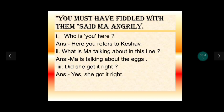Next passage: 'You must have fiddled with them, said Ma angrily.' — माँ ने गुस्से में कहा कि तुमने जरूर उससे कुछ छेड़छाड़ की है. First: who is 'you' here? यहाँ 'you' से तात्पर्य Keshav से है. Second: what is Ma talking about? Ma is talking about the eggs — माँ अंडों के बारे में बात कर रही है. Third: did she get it right? Yes, she got it right — वो बिल्कुल सही सोच रही थी.